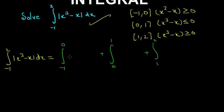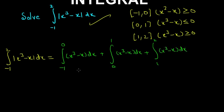Now write the function x cubed minus x in each interval. You just have to add the appropriate positive or negative sign. The first interval (minus 1 to 0) is greater than 0, so it keeps a positive sign. The second interval (0 to 1) is less than 0, so we add a negative sign. The third interval (1 to 2) is also greater than 0, so it stays positive. Now simply solve.